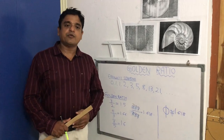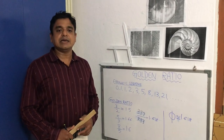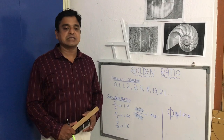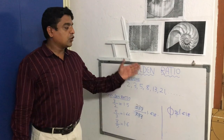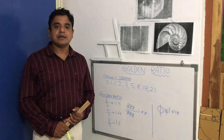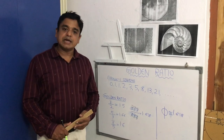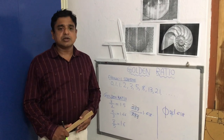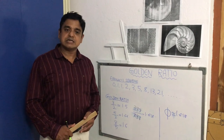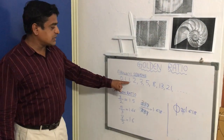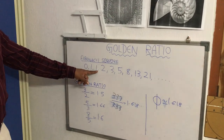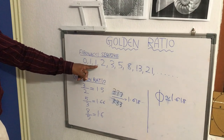Leonardo Fibonacci, an Italian mathematician, introduced this golden ratio while solving a problem involving the rabbit. So let us start with what is the Fibonacci Sequence. This sequence has been invented by Leonardo Fibonacci.